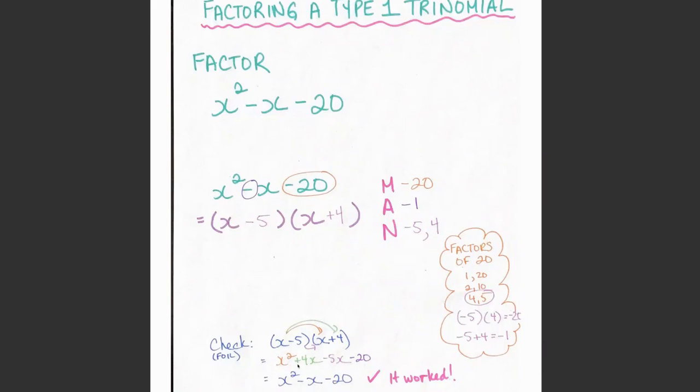When I add together my two middle terms, 4x - 5x is equal to -1. So I get x² - 1x - 20, which is what I started with.